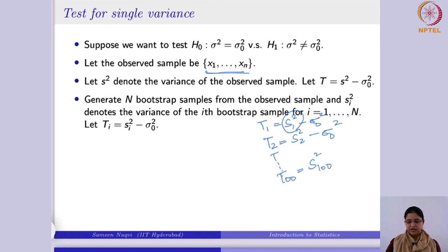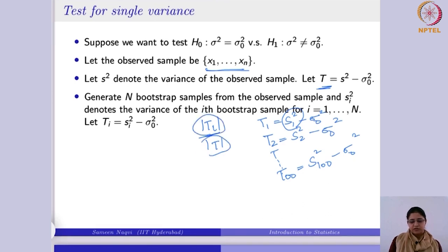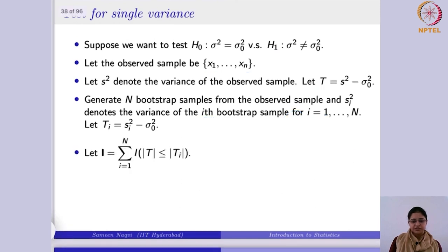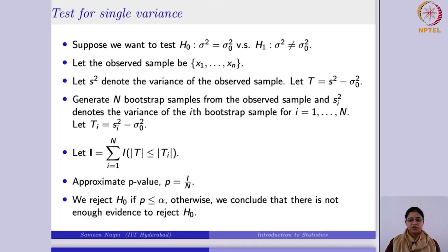For the 100th sample you calculate its sample variance and subtract sigma-naught-squared. Then you compare the absolute values of each Ti with the absolute value of the observed T. Using the indicator function, you count when the bootstrap statistic is more extreme than the observed statistic. The proportion i over n is your approximate p-value. Finally, you reject the null hypothesis if the p-value is less than alpha, otherwise you conclude there is not enough evidence to reject the null hypothesis. These computations will be done using software like Python, which we will cover in the next lectures.